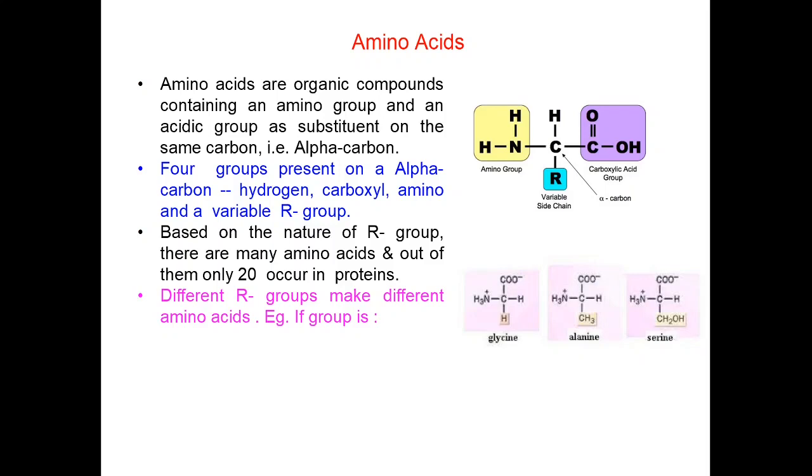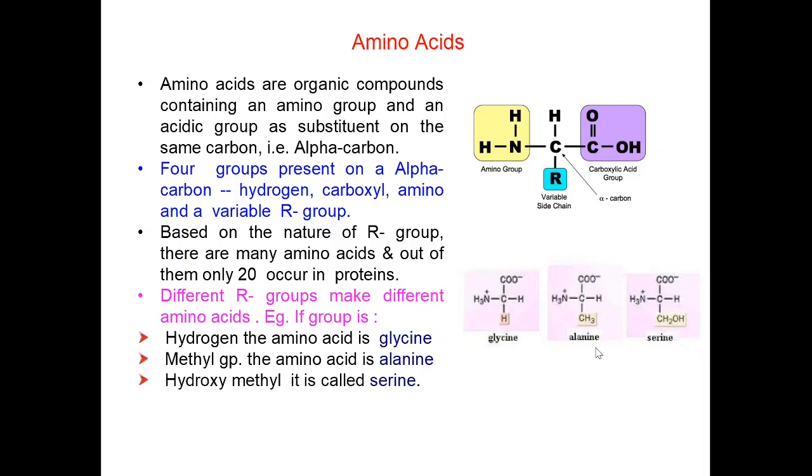For example, if R group is hydrogen, the amino acid is called glycine. If it is methyl group, the amino acid is called alanine. And if the variable side chain is hydroxymethyl, it is called serine. These three are mentioned in your NCERT book and there are other 17 amino acids which make the proteins.